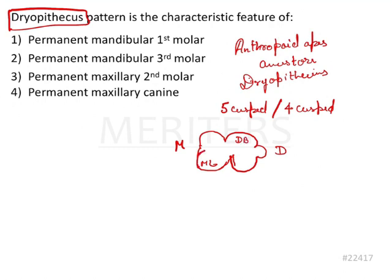The mesiolingual cusp connects to the distobuccal cusp going above the floor of the central fossa. These two cusps stretch so much that they meet with each other throughout the central fossa's length. That is what is known as the Dryopithecus pattern, and it is seen in the permanent mandibular first molar.